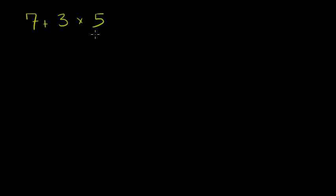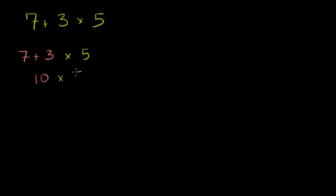You could just read it left to right. So you could say, let me just take 7 plus 3, and then multiply that times 5. And 7 plus 3 is 10, and then you multiply that by 5 — 10 times 5 gives you 50. So that's one way you would interpret it if we didn't agree on an order of operations. Maybe it's a natural way — you just go left to right.